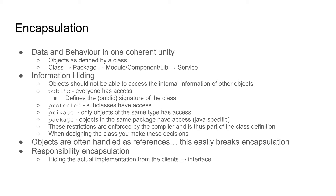The first thing that comes to mind at the quite low level of object-oriented programming is information hiding. This means that objects should not be able to access the internal information of other objects, especially if those objects are of another type.